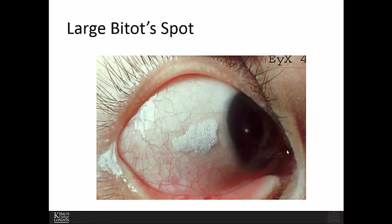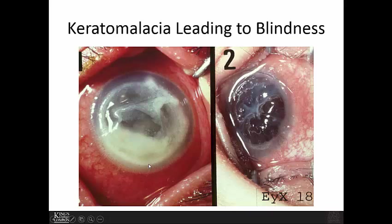A clinical photo shows a very large Bitot spot — looking like white bubbling ulceration appearing in the cornea. As it further develops, you get ulceration of the cornea, and this keratomalacia ultimately leads to blindness.